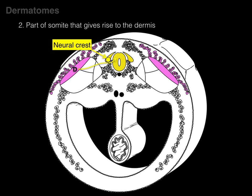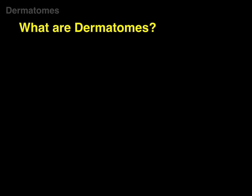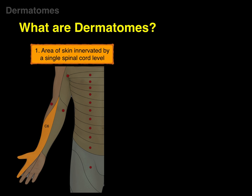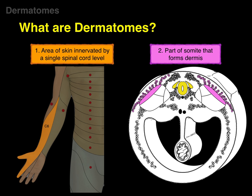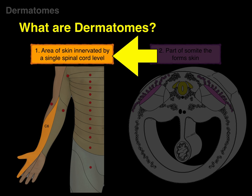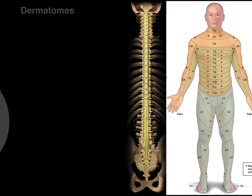So really, these two definitions of dermatomes go hand in hand. A dermatome is an area of skin innervated by a single spinal cord level, and it is also the part of the somite that forms the dermis. We're going to be focusing on that first definition throughout the rest of this tutorial.